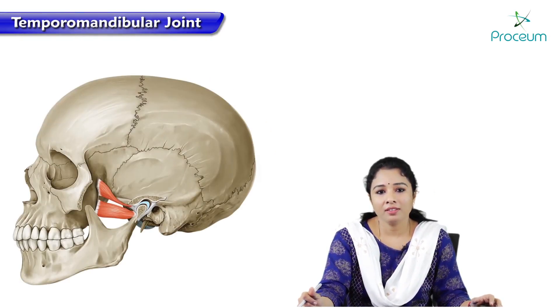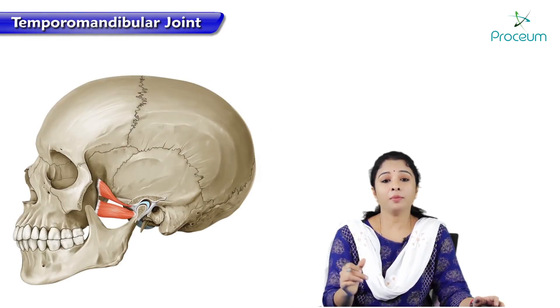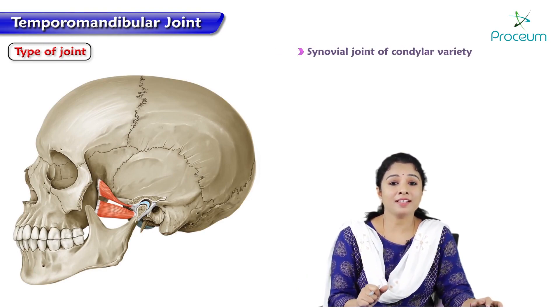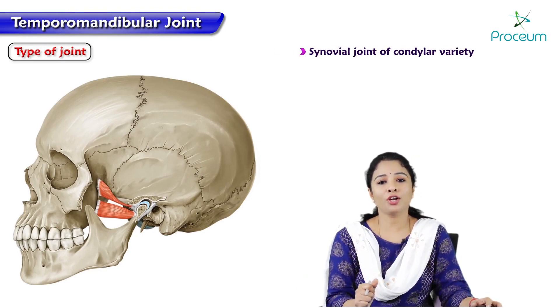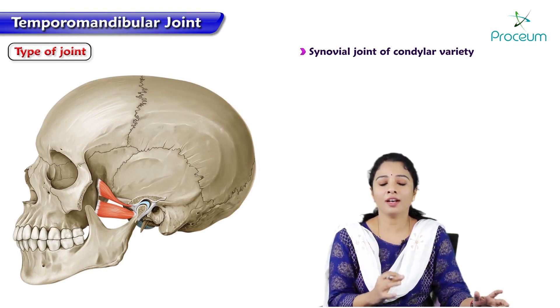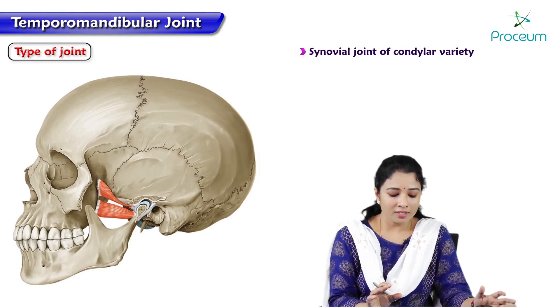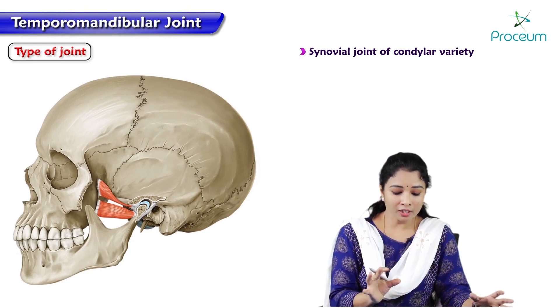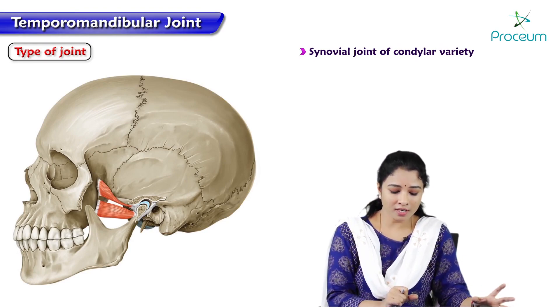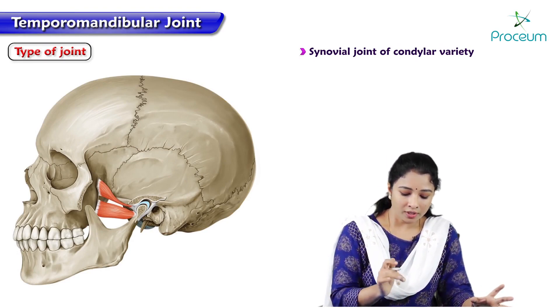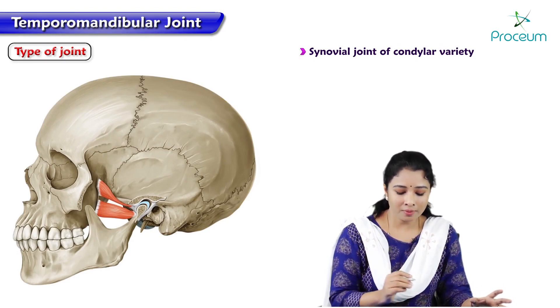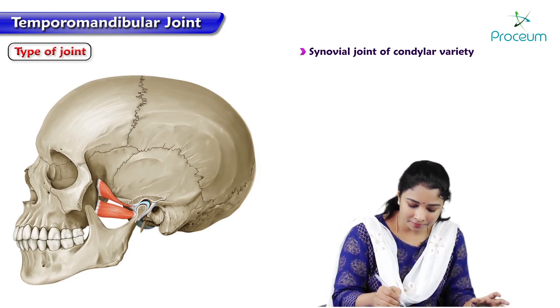Temporomandibular joint is a synovial joint of condylar variety. Here you are seeing the lateral view of the skull showing the temporomandibular joint.